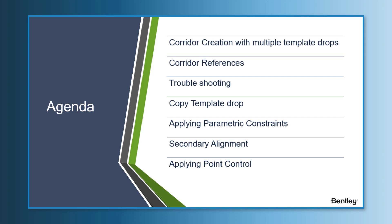I'll also demonstrate how to copy a template drop, apply parametric constraints, show you what a secondary alignment is and how it affects your corridor modeling, and lastly, we'll be applying point controls.